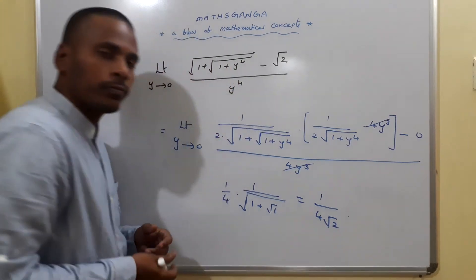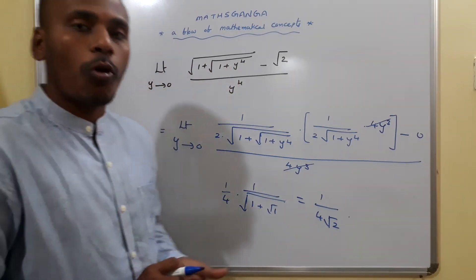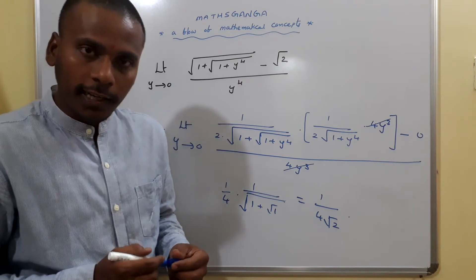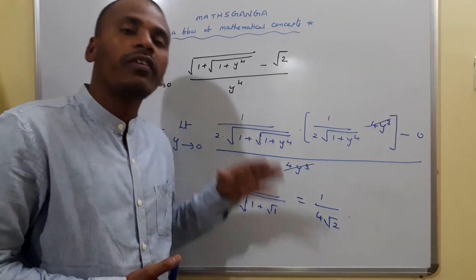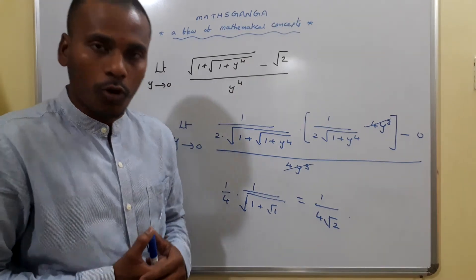And your answer is 1 by 4 root 2. This is one more easiest problem asked in the JEE Main January 2019 from the concept of limits and continuity. Your answer is 1 by 4 root 2, and we apply L'Hospital's rule for this problem. Thank you.